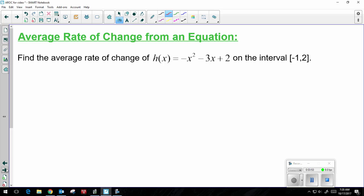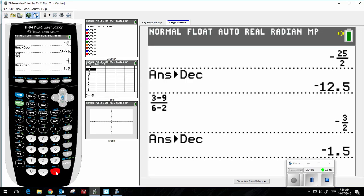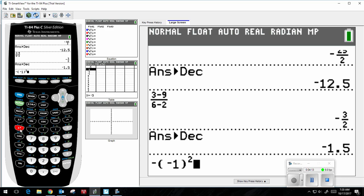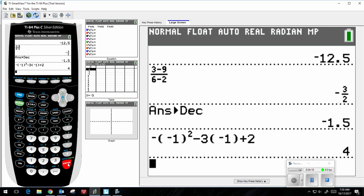So you have two options here. You can substitute. So I can do h of negative 1 equals negative negative 1 squared minus 3 times negative 1 plus 2. And I can type that into the home screen of my calculator, and I would get 4.